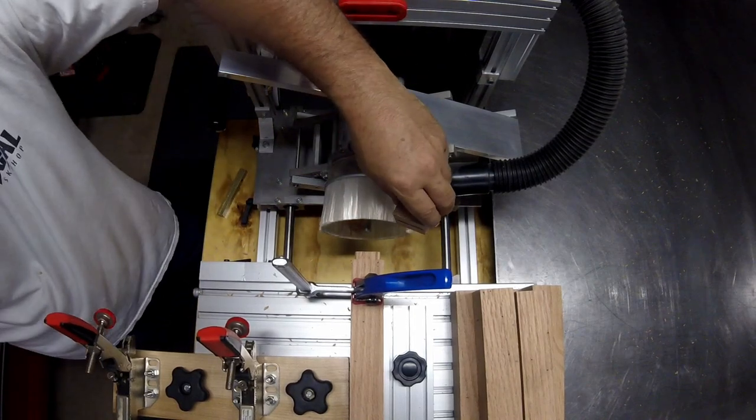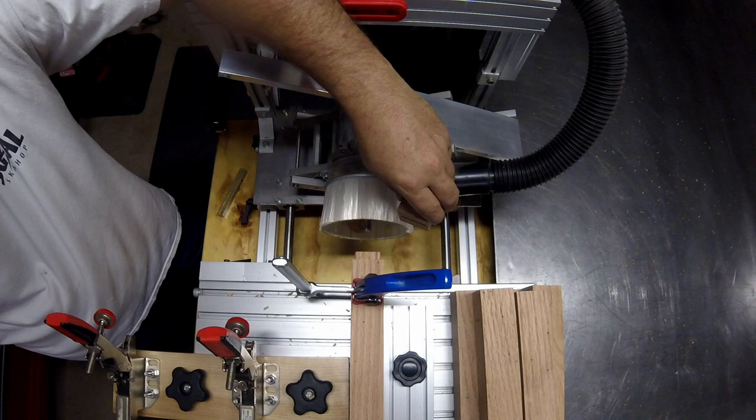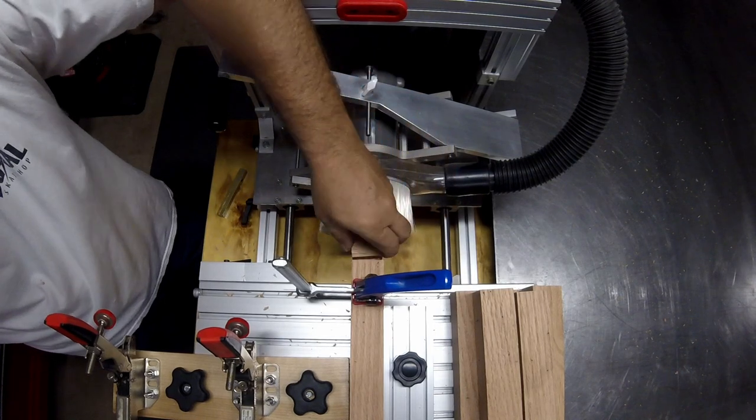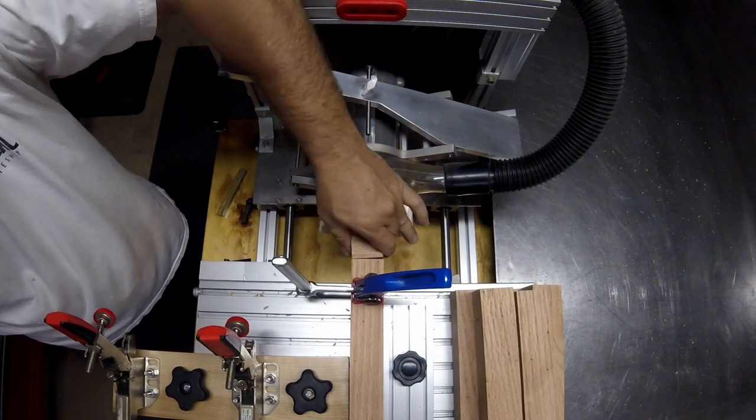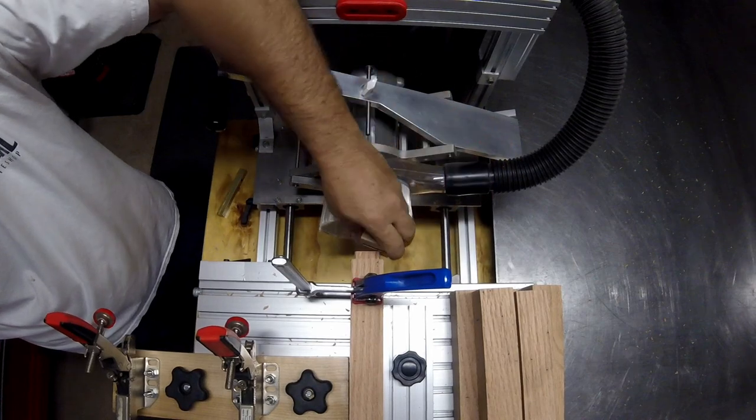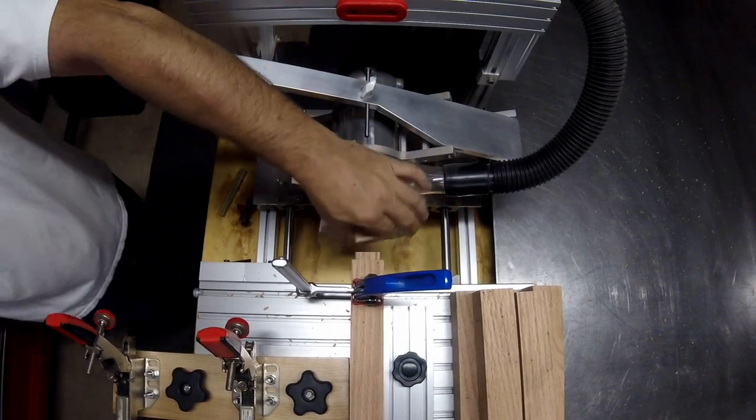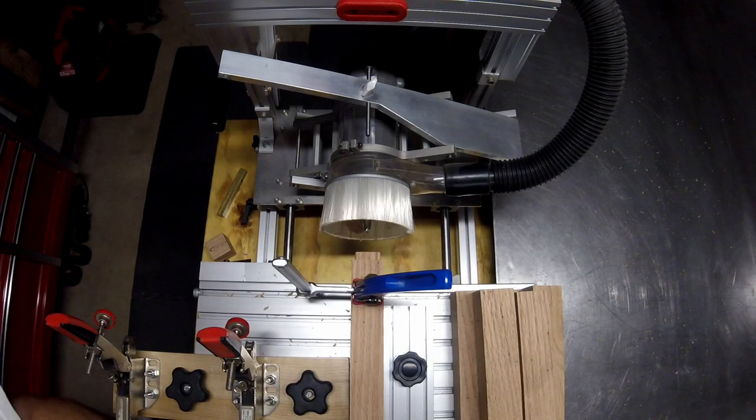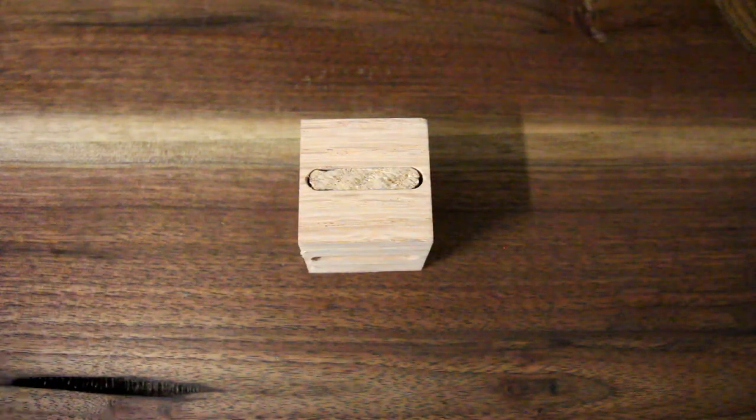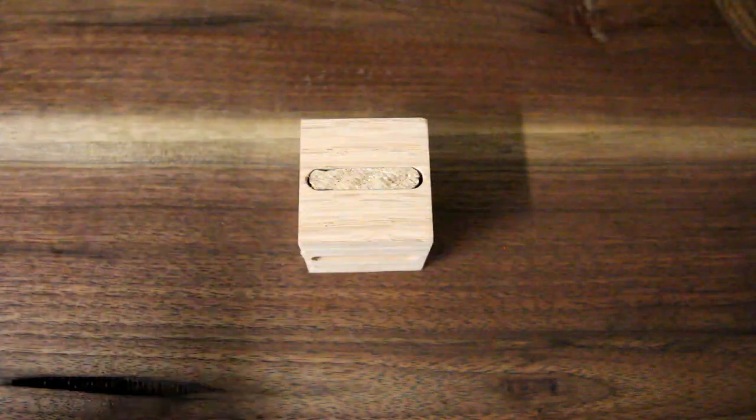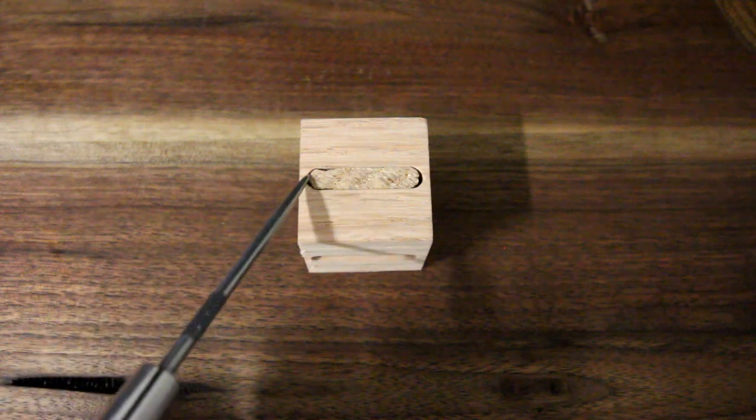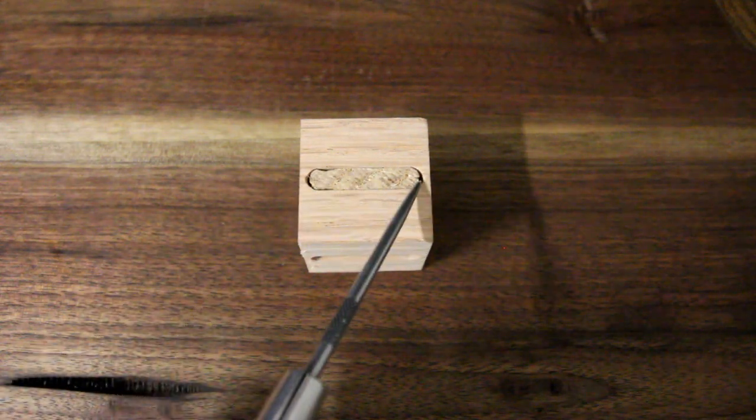And here I've got a test piece just to make sure that I'm where I want to be. And then here's an example of how the tenon fits in the mortise after doing some test cuts. You can see that there's just a very slight gap on the ends that gives me some play and some glue surface.